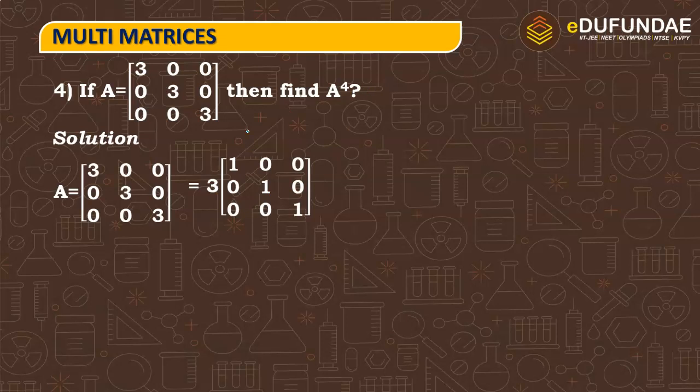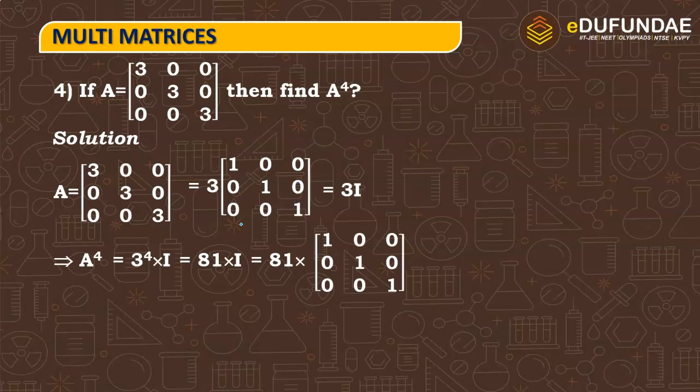Now we want to find out A raised to power 4. It is simply that we need to power this thing, 3I, and how much power should be, 4 should be, so 3 raised to power 4 into identity matrix. Identity matrix I raised to power 4 is the same as I. Now 3 raised to power 4 can be written as 81 into I, so I will replace from 1, 0, 0, 0, 1, 0, 0, 0, 1, so finally we are getting 81, 0, 0, 0, 81, 0, 0, 0, 81 as our final answer which is A raised to power 4.